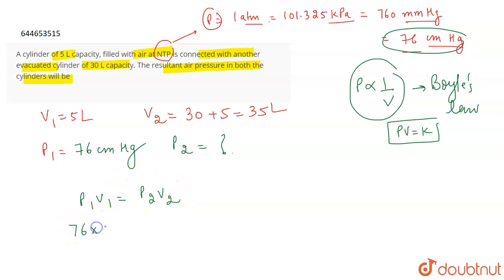Right, so P1 is 76, V1 is 5, divided by V2 which is 35, is going to give you the value of P2.